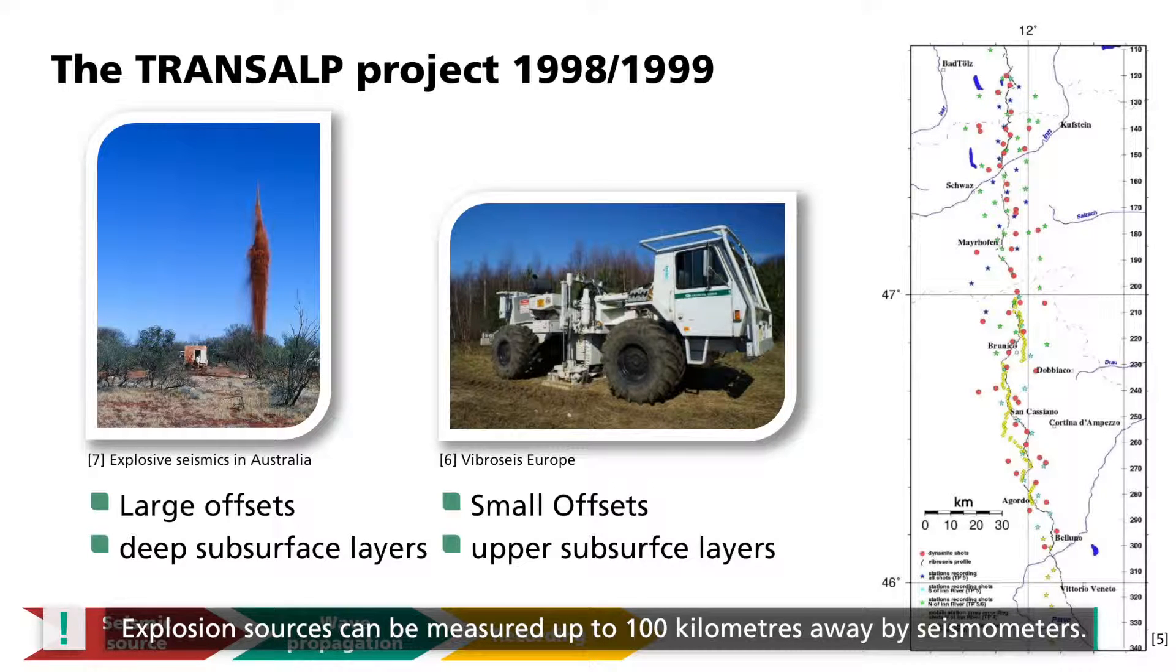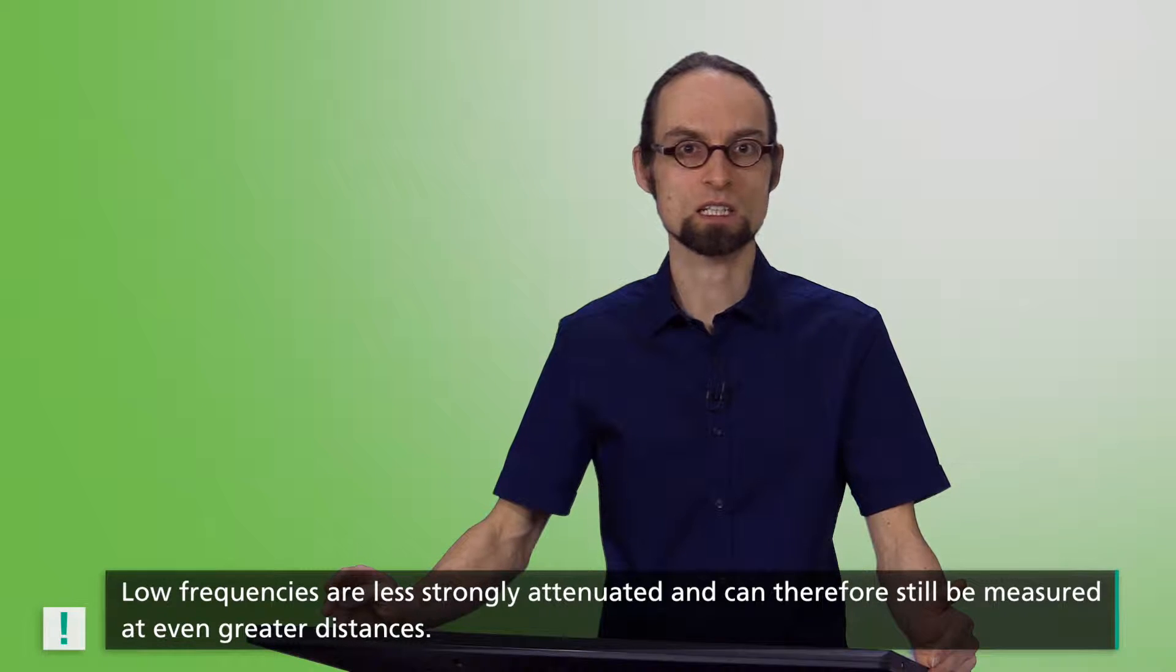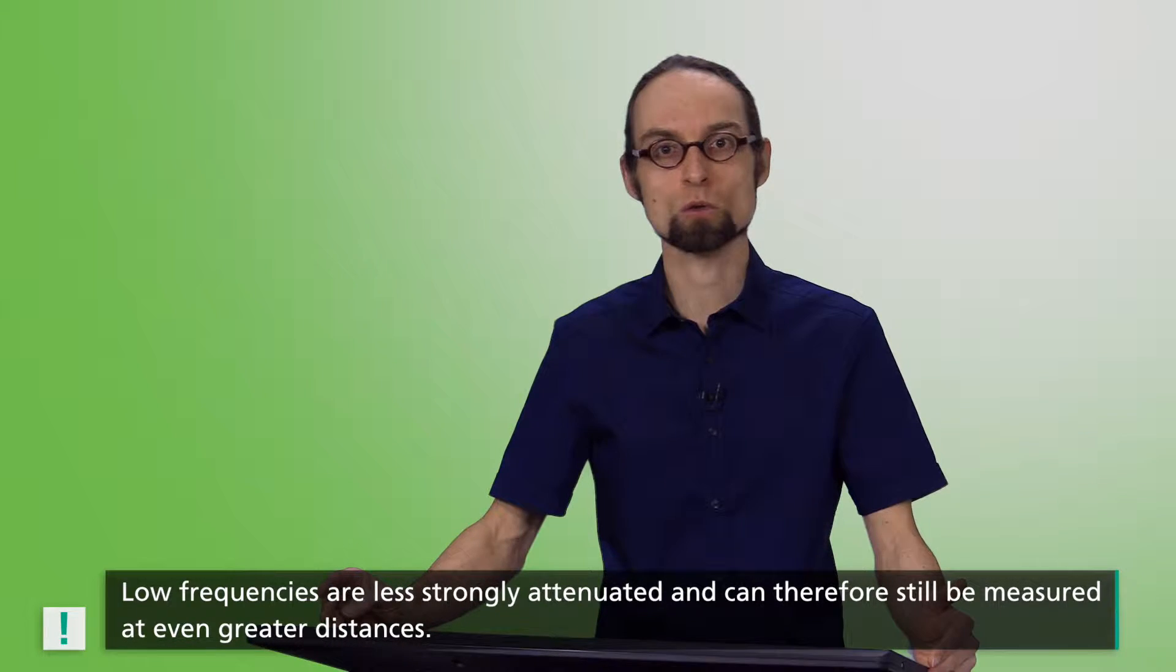Explosions, also referred to as shots, can be measured over 100 kilometers away. Another difference between explorations with small and large offsets is the frequency content. For short profiles, also called offsets, vibroseis trucks can produce frequencies of up to 100 Hz or even more. For wide-angle measurements, lower frequencies of around 10 Hz are required. Low frequencies are less strongly attenuated and can therefore still be measured at even greater distances. The disadvantage of low frequencies is due to their longer wavelengths, which decreases the spatial resolution.